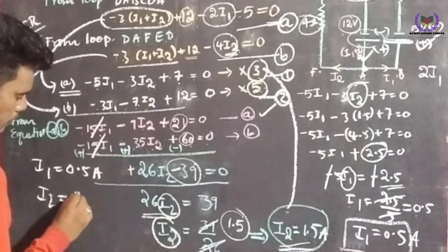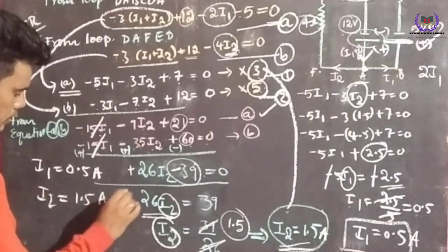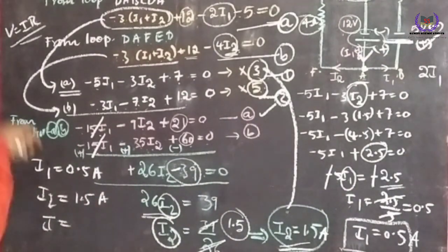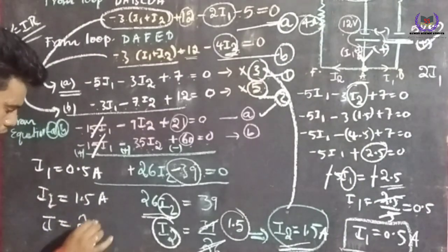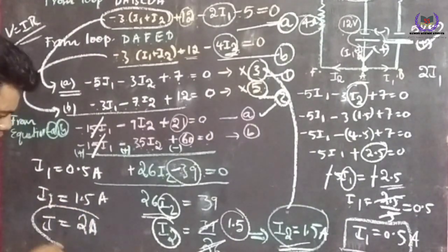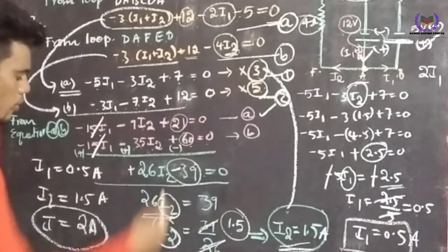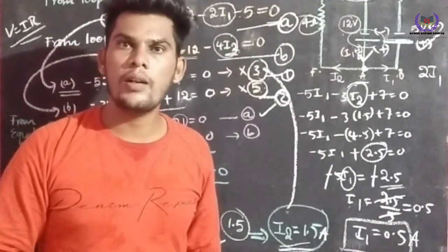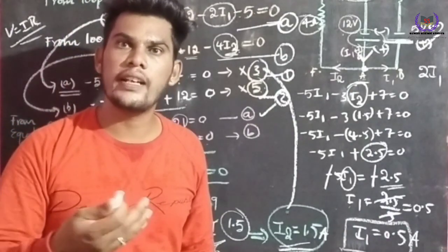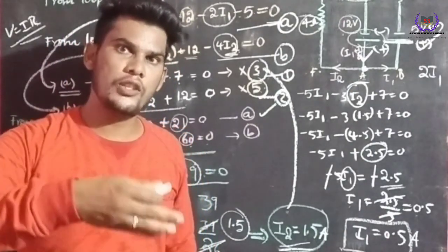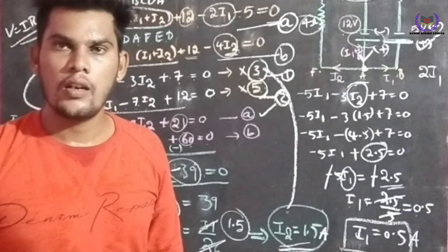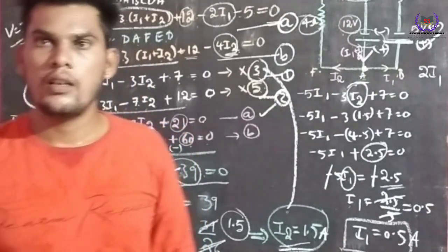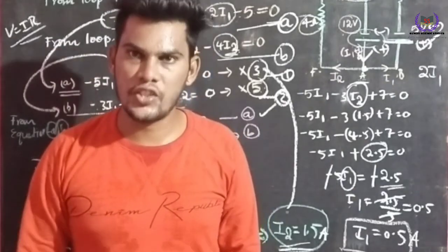So I1 = 0.5 amperes and I2 = 1.5 amperes. The total current I = I1 + I2 = 2 amperes drawn from the 12-volt battery. This is the mathematical problem of Kirchhoff's voltage law. In the next video I will explain a few more problems related to the loop law. Thanks for watching, keep smiling.